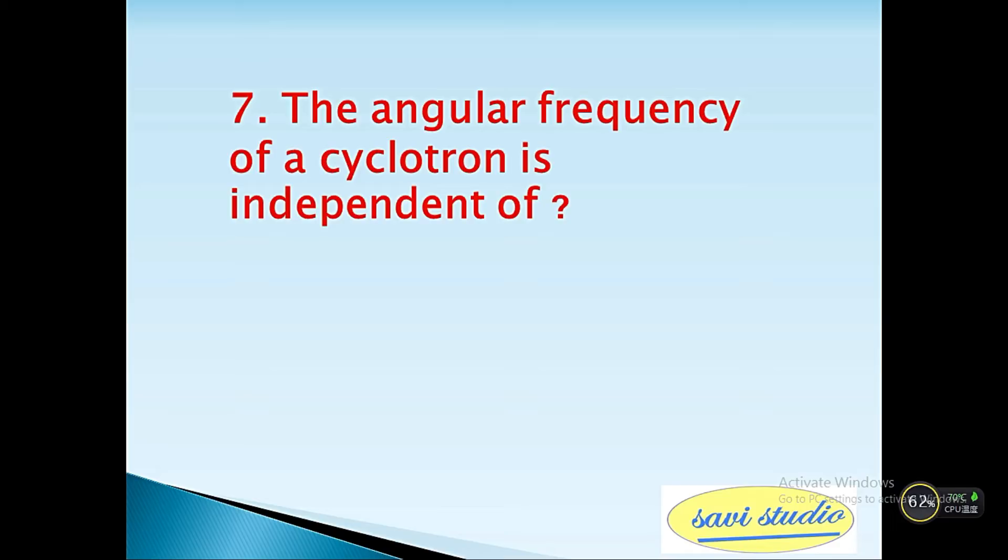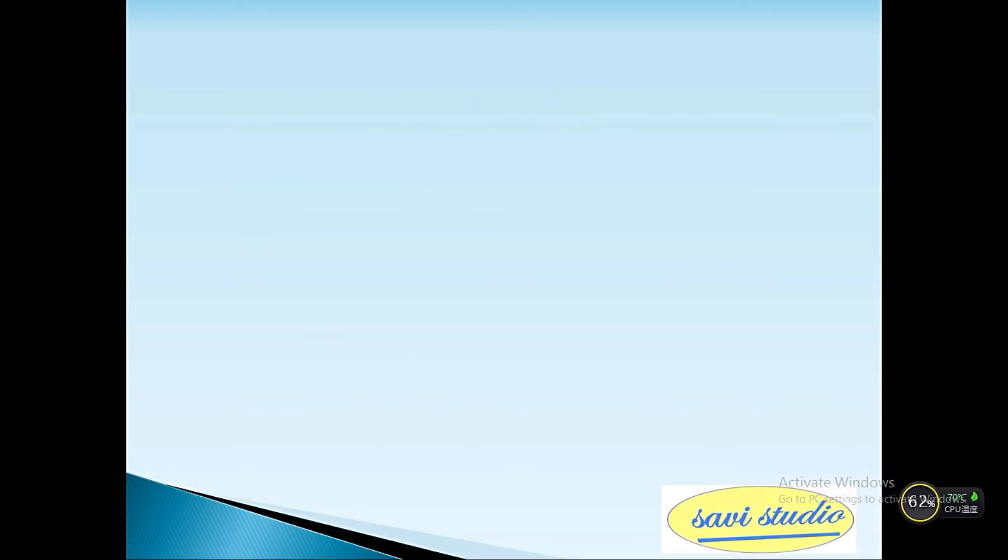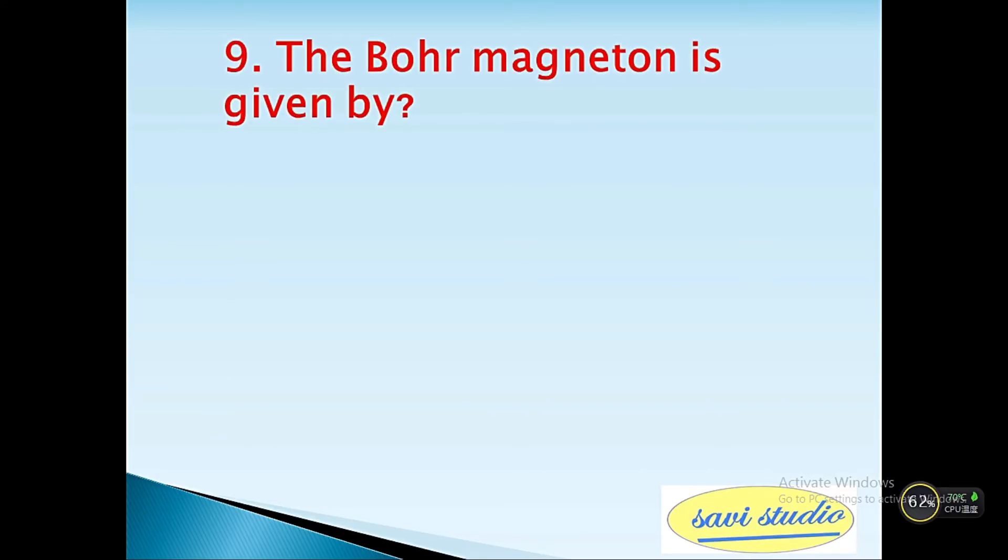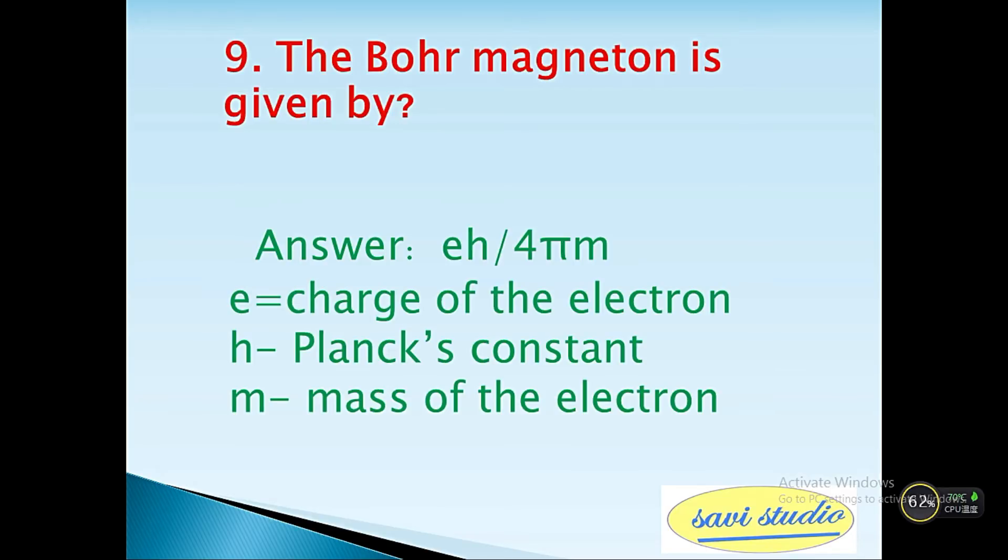Eighth question: A cyclotron can accelerate electrons, true or false? Answer: false. Ninth question: The Bohr magneton is given by? Answer: e h by 4 pi m, where e is charge of the electron, h is Planck's constant, m is mass of the electron.